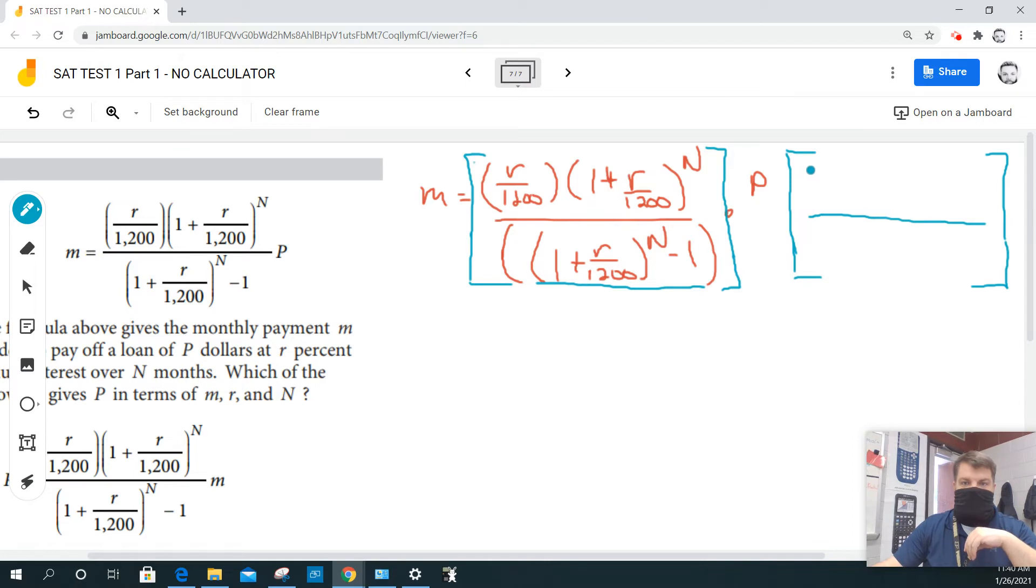In other words, this denominator now becomes the numerator: 1 plus R over 1,200, raised to the N minus 1, all over R over 1,200. So now I'm taking this and putting it down here on the bottom, times the quantity 1 plus R over 1,200 raised to the N.